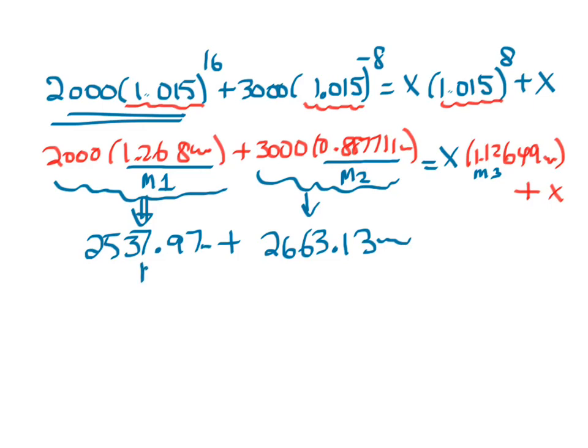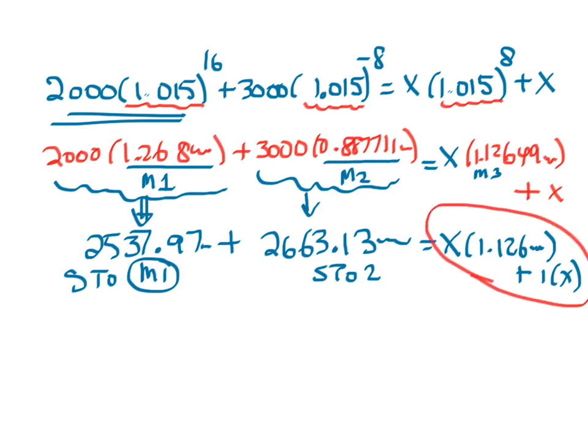That equals X multiplied by 1.126... plus another 1X. We don't have two X's - we have a bit more than two X's on the right side. Recall memory three and add one to its contents, so we have X multiplied by 2.126... Put this number in memory three.